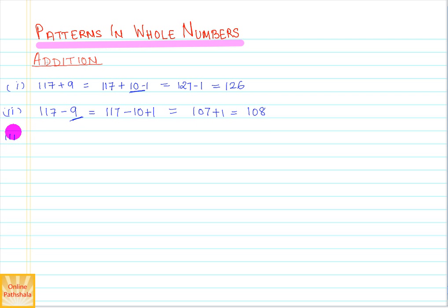Let me take another example where we do 117 plus 99. If we observe this pattern based on this, we can write 117 plus 100 minus 1, because 100 minus 1 is 99, and then it becomes 217 minus 1, which is very simply 216.